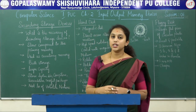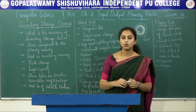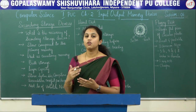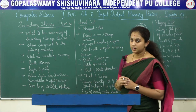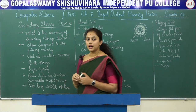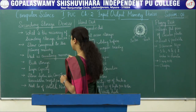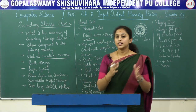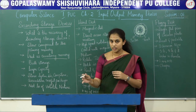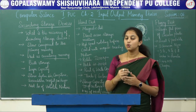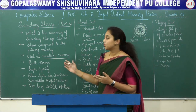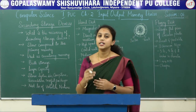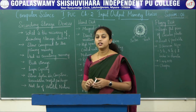So why do we need secondary storage devices? Since the storage capacity of primary memory is not very large and cannot hold all data including the programs needed for processing, secondary memory is necessary. It is slow compared to primary memory and is used as auxiliary memory. Information not currently being processed is stored in secondary storage devices, while information required by the CPU is transferred from secondary storage to main memory. It is used for bulk storage of data and has larger capacity than main memory.